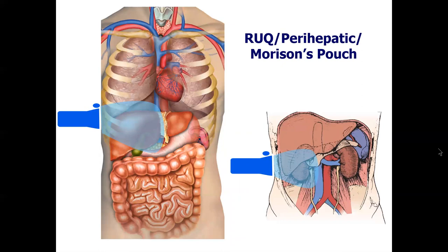For this lecture, I'm going to start with both upper quadrant views since the anatomy is comparable. We'll start with the right upper quadrant — also known as perihepatic, also known as Morrison's pouch. There is Dr. James Rutherford Morrison himself, born in 1853. He has a pouch named after him, a surgical incision, and he invented an antiseptic dressing in World War I. I like to think of it as the perihepatic space — I want to see above the liver, the liver itself, and below the liver. I want to see the diaphragm, the subdiaphragmatic space, and Morrison's pouch all the way to the tip of the liver.